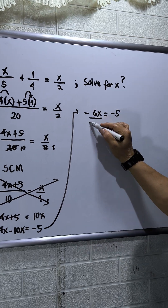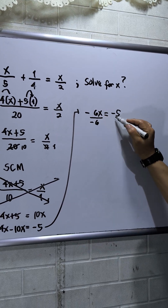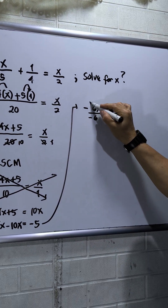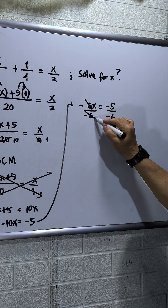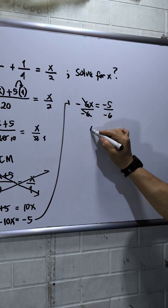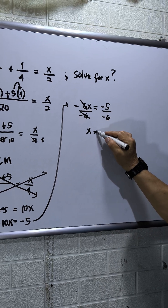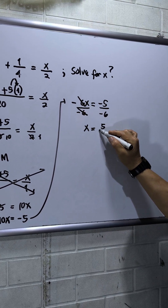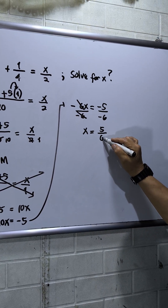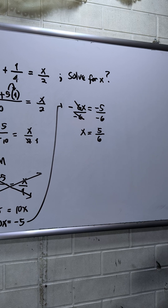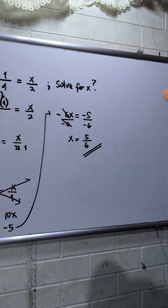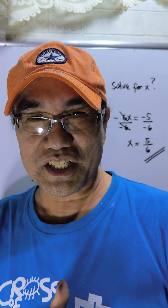To solve the value of x, divide both sides by negative 6. Negative 6 cancels out, so x is equal to positive 5 over 6. That's all, thanks for watching.